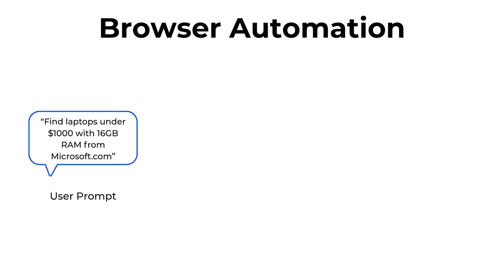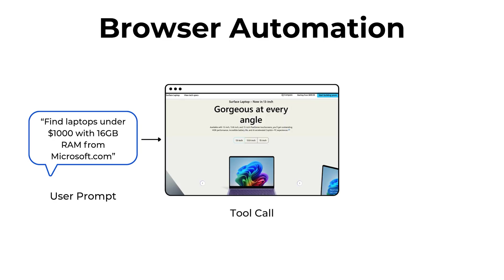So just how does it work? You send a natural language request to the agent — something like 'find laptops under $1,000 with 16 gigabytes of RAM from Microsoft.com.' Azure AI Foundry then spins up a secure sandbox browser session through Playwright Workspaces in your Azure subscription. The model inspects the page's structure and figures out what actions to take, whether that's clicks, form fields, or navigations.